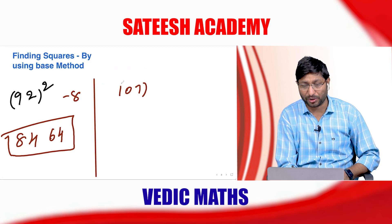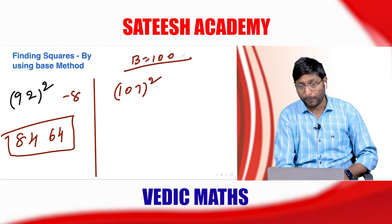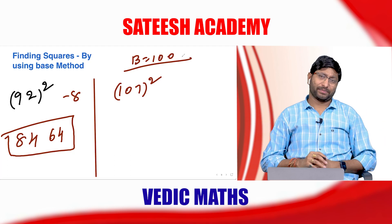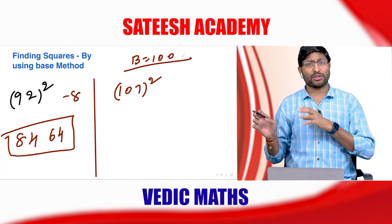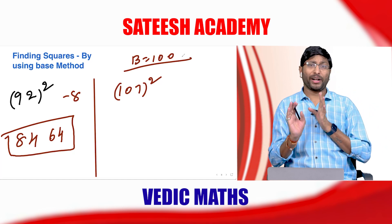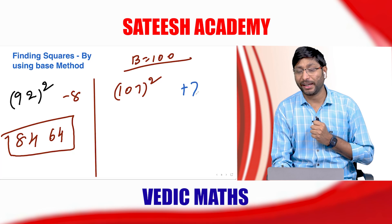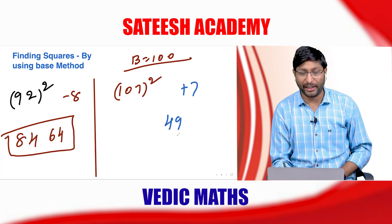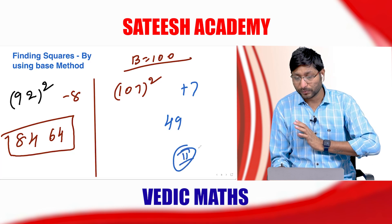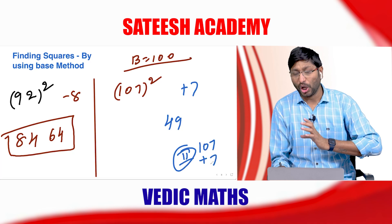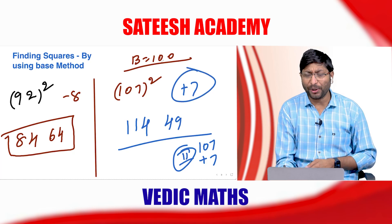Next: 107 squared. If you didn't watch my base method videos there are 3 videos — please watch those before continuing so you understand what I'm doing. 107 is above base 100, so the difference is plus 7. Step 1: 7 squared = 49. Step 2: 107 plus 7 = 114. Answer: 11449.